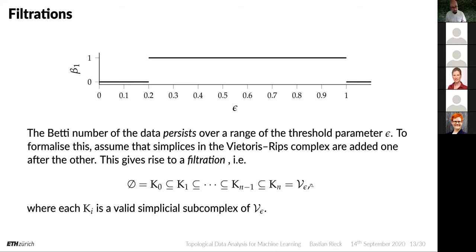Each of those K_i in this sequence is a valid simplicial subcomplex of the Vietoris-Rips complex. This makes sense: as we increase the distance threshold, more and more simplices will be added. There is always a valid simplicial complex regardless of which threshold we pick.